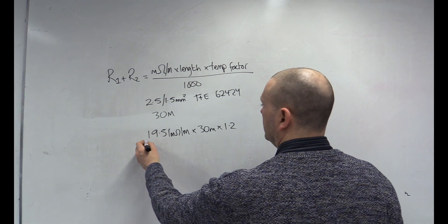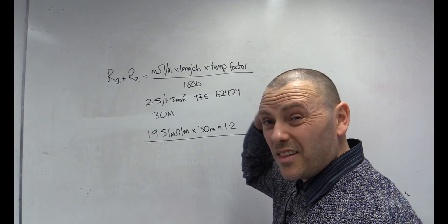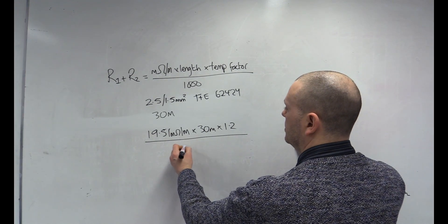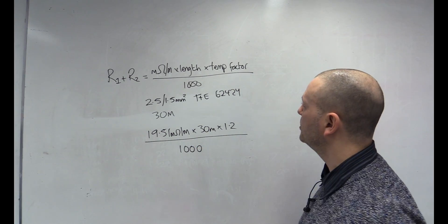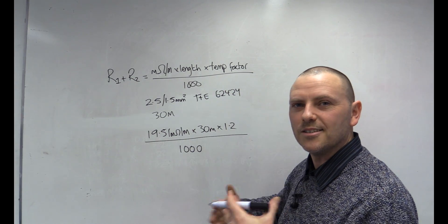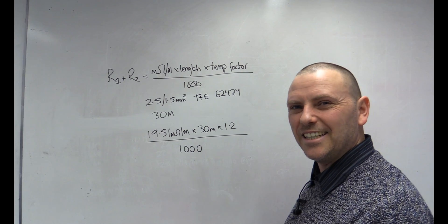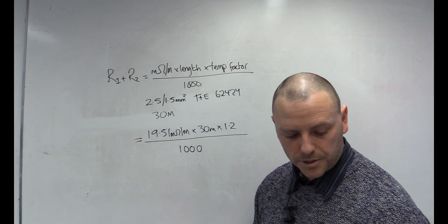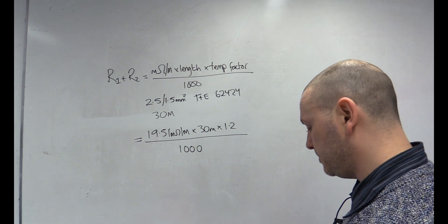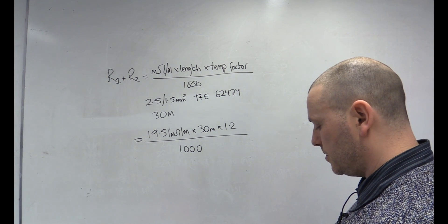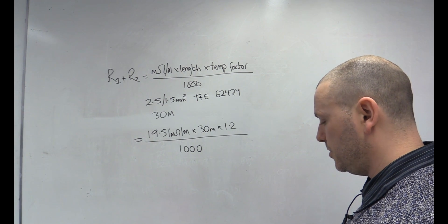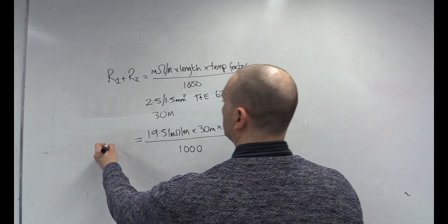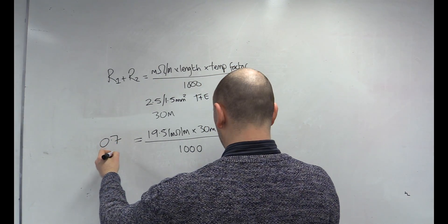It's a real cheat, that is. The alternative is that it's not that hard, the other equation, but it's a little bit trickier and it takes longer. So, we've got to be thankful for the people that have kind of come up with these equations and the factors and the tables. It takes a bit of getting used to, but actually it saves you loads of equations. So, let's see what the R1, R2 is for that circuit. 19.51 times 30 times 1.2 divided by 1,000. So, our R1, R2 would be 0.7 ohms.